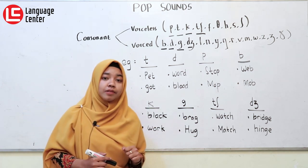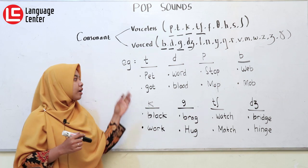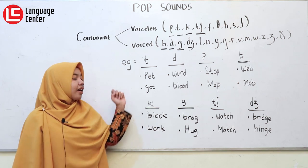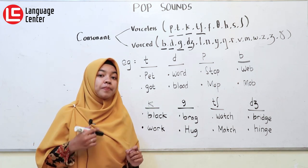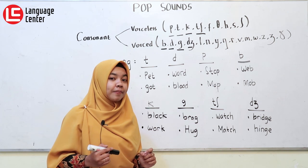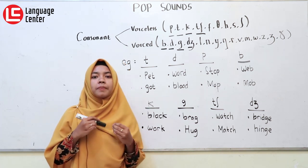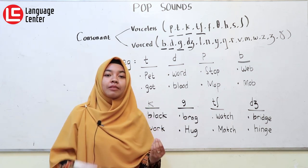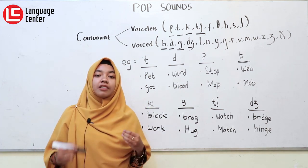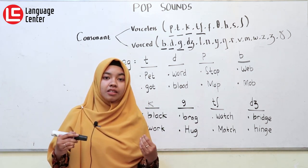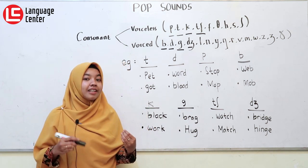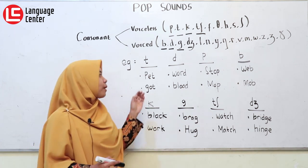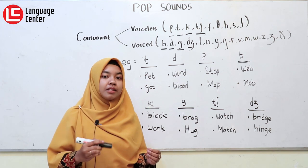I wanna give you some examples of the sounds — I mean pop sounds. The first, if in T sound, for the examples, there is 'pet', 'pet'. Jadi kalian harus memberikan suara T di akhir. Yang kedua, ada contoh 'got', 'got'. Ada desisan seperti itu — suara T di akhir kata. Yaitu ada 'pet', 'got'.